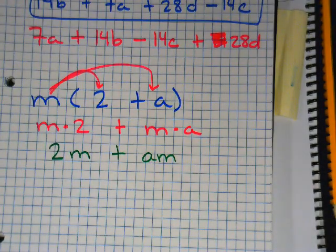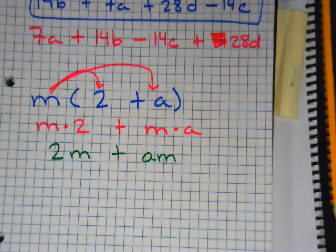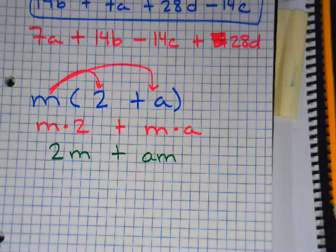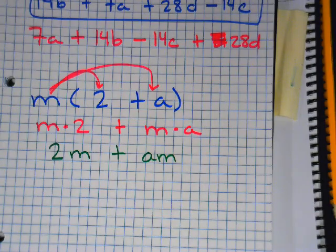Now we can multiply variables together, but we can't add them. So I can't put these two together because this one does not have an A, and this one does. So they're different. This would be your final answer.